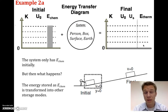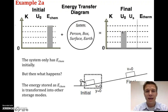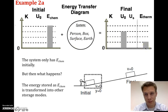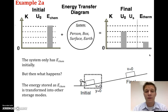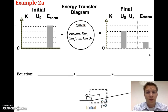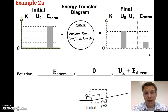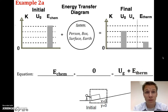The energy stored chemically is transformed into energy stored gravitationally and energy stored thermally due to friction between the surface and the box. I chose three units of UG and one unit of eTherm at the end, because four plus zero must equal the total final energy — everything must be accounted for. The equation is: eChem plus zero work equals UG plus eTherm. In the future we'll substitute specific physics equations for each energy storage mode.